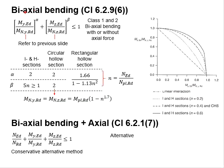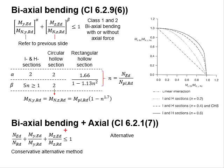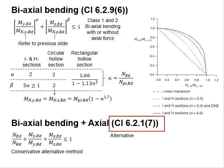This equation is applicable for members subjected to bi-axial bending with and without axial force. Alternatively, a more conservative equation may be used. The relevant clause is Clause 6.2.1.7.